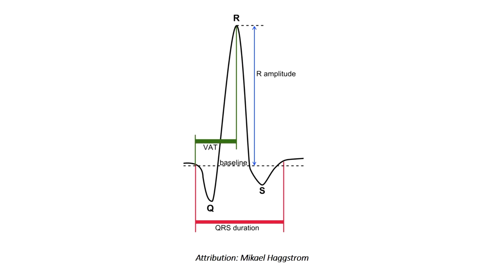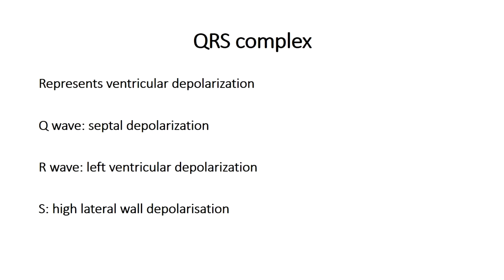In this video in our ECG series we're going to talk about the QRS complex — what it actually represents and what the normal parameters are. The QRS complex represents ventricular depolarization, specifically the depolarization of both the left and right ventricle together, and it is an electrical representation of this physiological event on ECG paper.